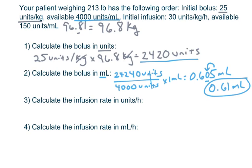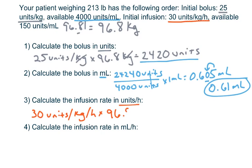Now the bolus is complete. For the infusion rate in units per hour, multiply 30 units per kilogram per hour times his 96.8 kilograms. Kilograms cancel. 30 times 96.8 equals 2,904 units per hour.